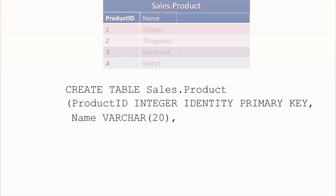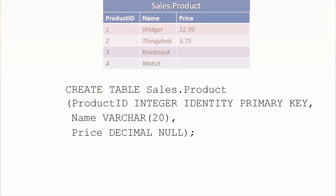The next column is Name of type varchar(20) — varying characters, so it's a string value that can have any number of characters up to 20. Then there's a Price column specified as a decimal value, with the word NULL included — meaning the column allows nulls. We may not supply a price for every row, either because we don't know it or because it doesn't have a price. In other words, we're not enforcing an explicit value in this column; a null says either there is no price or we don't know what it is.